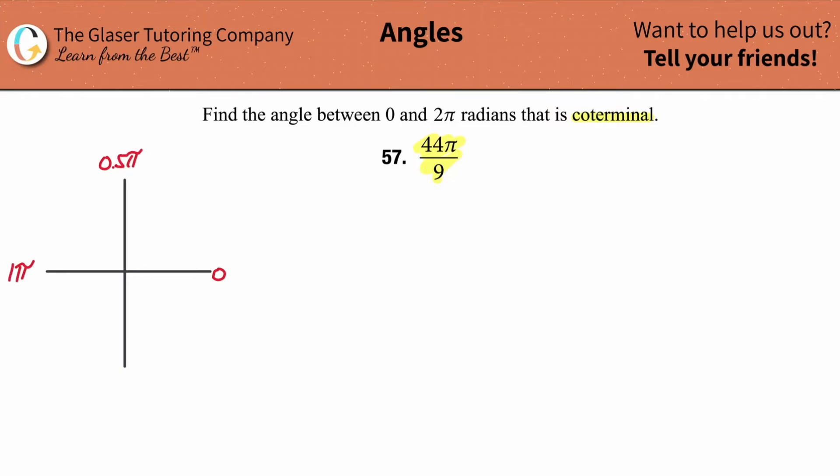Then this represents 1 full pi's worth of radians, and this would represent then 1 and a half pi. Oh, and you're like, oh, this is simple now. That's 2 and a half. This would be 2.5 pi. If you kept rotating, this would then be 3 pi. If you kept going, this would be then 3 and a half pi.